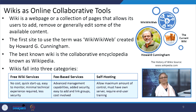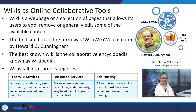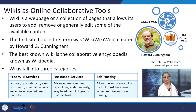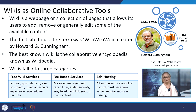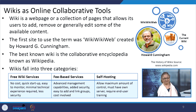All of us are familiar with wikis — we know that they are online collaborative tools. The best known wiki is Wikipedia. Wikis fall into three categories: free wiki services with quick startup that a person with minimal technical know-how can easily use; fee-based services which require advanced management capabilities but have added security features at a certain cost; and the self-hosting category, which allows maximum control but requires one's own server and end-user training.